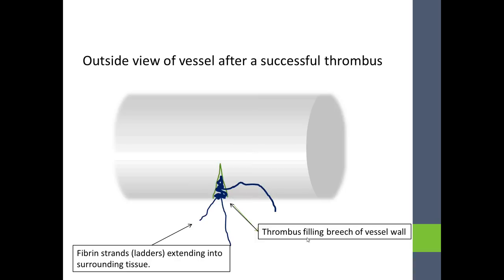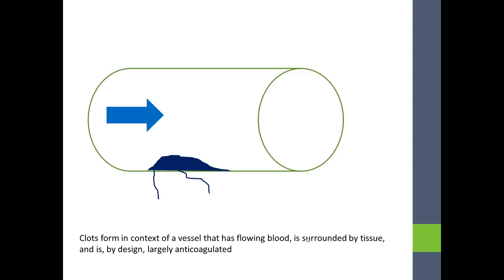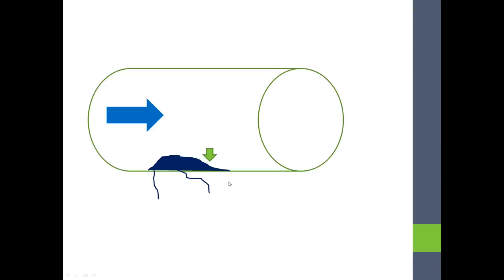The function of a clot is to fill the breach in a blood vessel and to help stabilize the fractured vessel while it can heal. Clots form in the context of a vessel that has flowing blood, shown here with the arrow, surrounded by tissue and endothelium, which is by design largely anticoagulated. The clot is formed with a shear effect and the downstream side is washed away, much like a sandbar in a river where the water flowing over it washes the downstream side away.